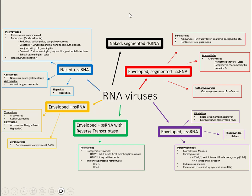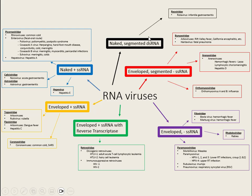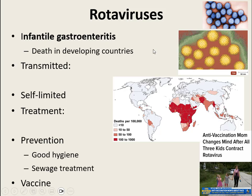Our final RNA virus group is the Reoviruses, also known as rotaviruses. What's unique about them is that they have double-stranded RNA — unique among all these RNA viruses. They cause infantile gastroenteritis — really bad diarrhea — and in developing countries this is a top cause of death. It is transmitted fecal-oral. Before the vaccine was developed, it was nearly 100% certain that kids picked up rotavirus before age two.